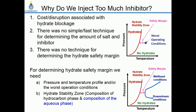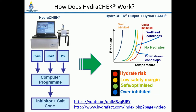So what we need is a quick and fast technique for determining the composition of the aqueous phase. HydraCheck is designed to do exactly that. It determines temperature, electrical conductivity, and sound velocity in a water sample — the temperature probe, conductivity measurement, and ultrasonic transmitter and receiver — with readings fed into a computer program that gives inhibitor and salt concentrations.